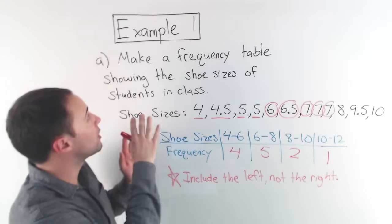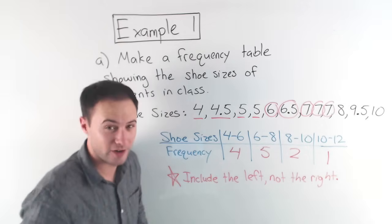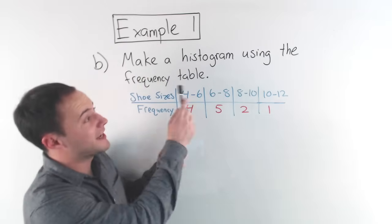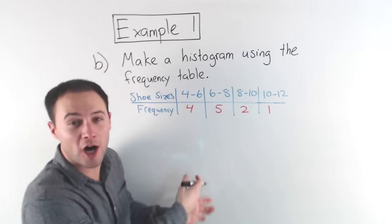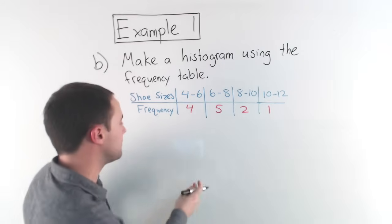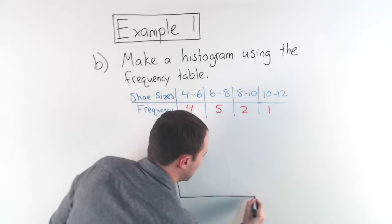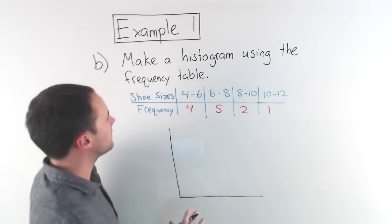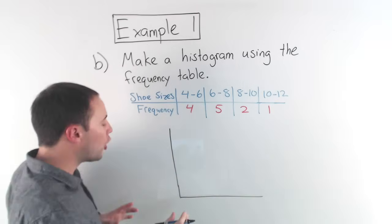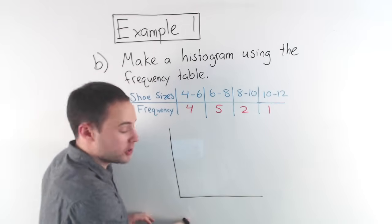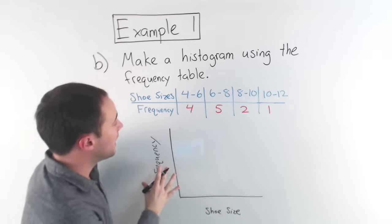Now for part B, we're going to learn how to turn this into a histogram. Okay. Part B, make a histogram using the frequency table. And it's pretty simple. So, first step, draw your axes and label them. So I'm going to start like that. And sorry, that's not perfect. Shoe sizes, whatever you have on top, that's always going to go on your X axis, which means my Y axis then is labeled frequency.